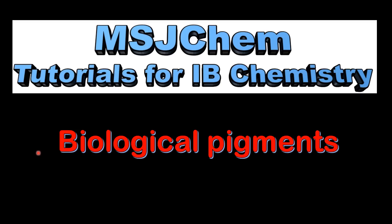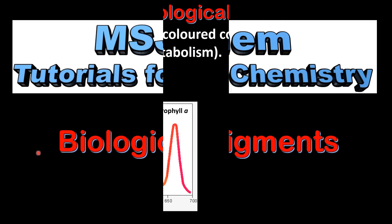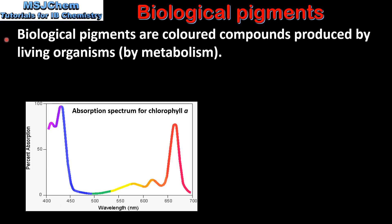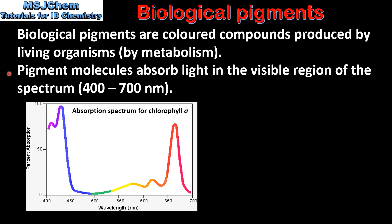This is MSJChem. In this video I'll be looking at biological pigments. Biological pigments are coloured compounds produced by living organisms. Pigment molecules absorb light in the visible region of the spectrum, which is between 400 and 700 nanometers.